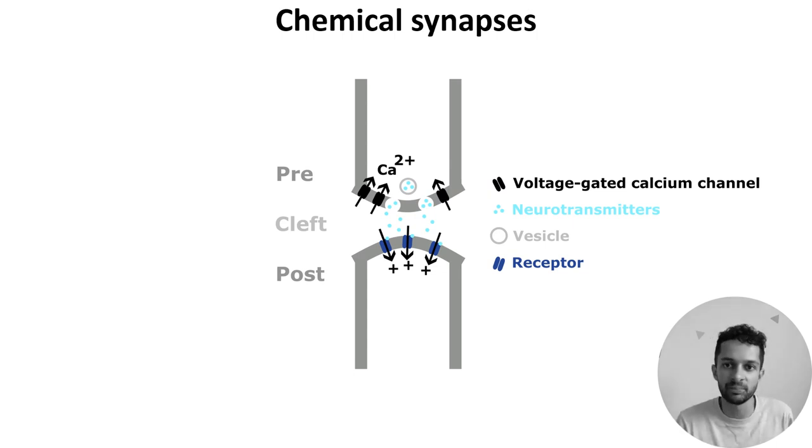In the diagram here, binding causes an ion channel to open and positive ions to flow into the post-synaptic neuron, raising its membrane potential. So we would describe this as an excitatory synapse, as a pre-synaptic action potential will make the post-synaptic neuron more likely to fire a spike. Conversely, inhibitory synapses reduce the post-synaptic neuron's membrane potential and make spiking less likely.